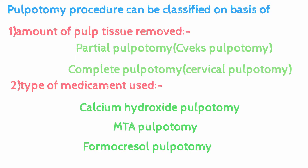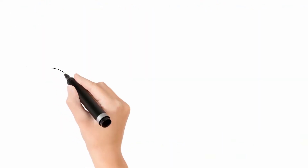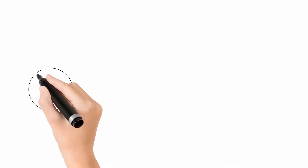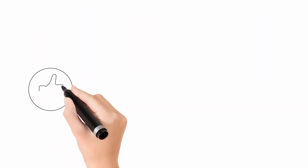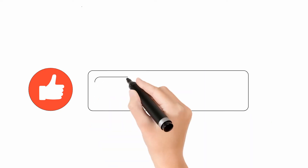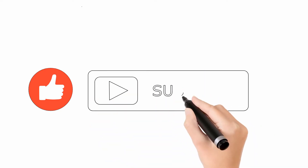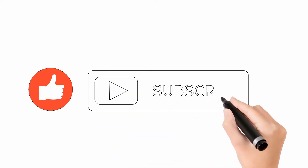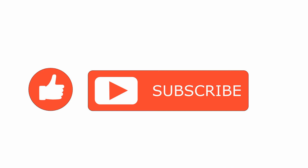In the procedure, the inflamed coronal portion of the pulp is removed and a dressing is placed over the pulp to protect and promote healing. The most commonly used dressing materials are calcium hydroxide or MTA.